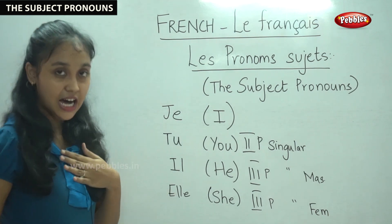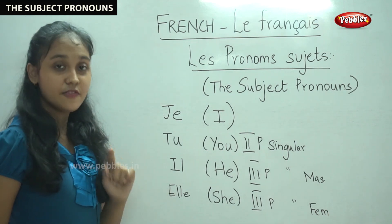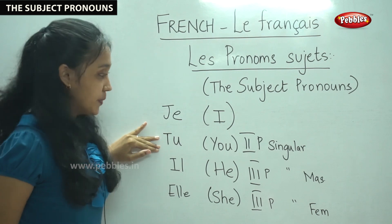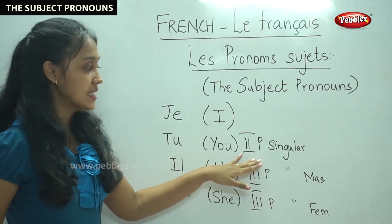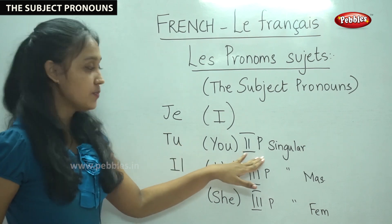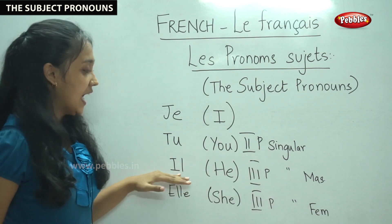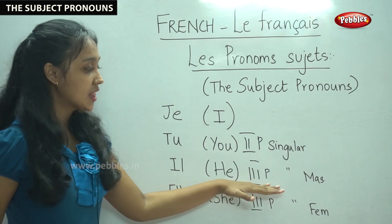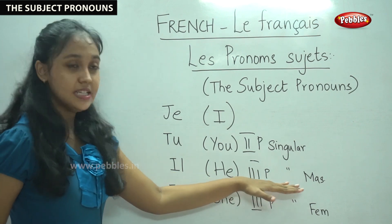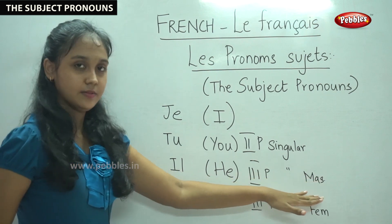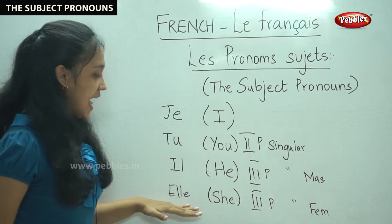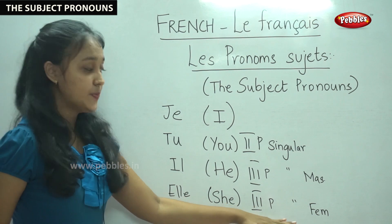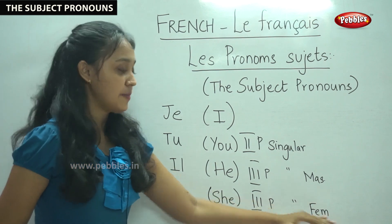So to recap: Je means I — first person singular. Tu means you — second person singular. Il means he — third person singular masculine. Elle means she — third person singular feminine.